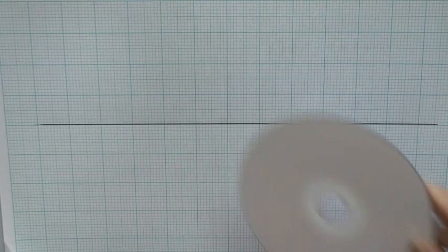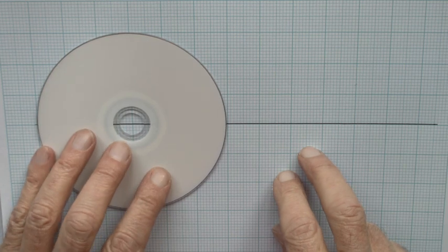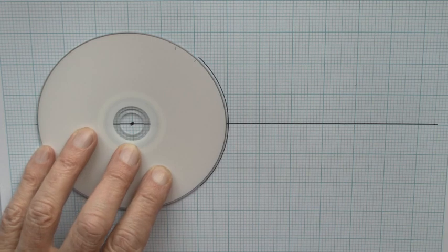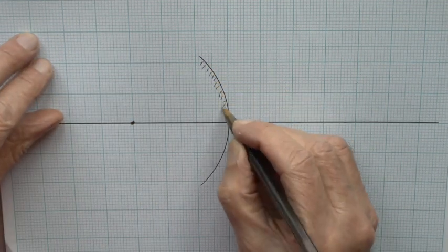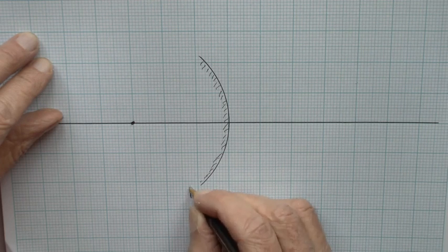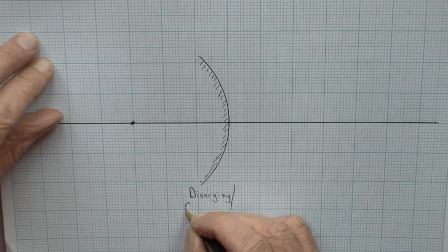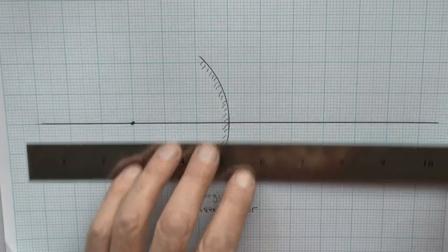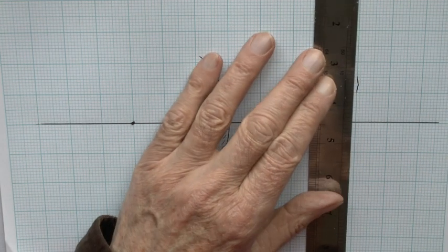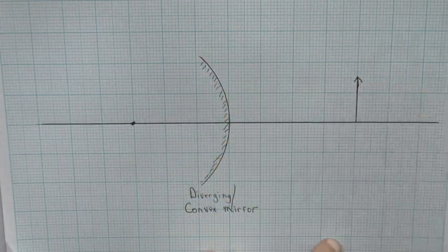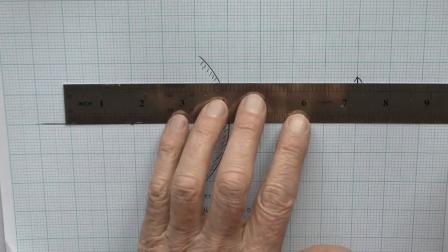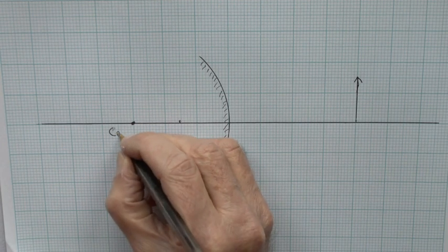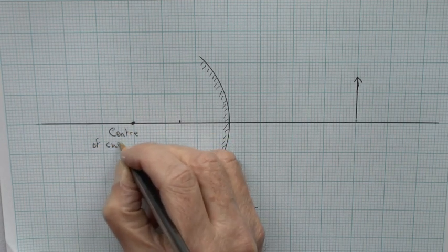Moving on to ray diagrams drawn on graph paper—graph paper is always the best material because it's easy to get the scales right. We'll represent the mirror, mark the center of curvature, shade the back of the mirror so it's obvious it's a convex mirror. We'll draw in an object in front of the mirror some distance away, further than the center of curvature is behind, marking the focal point halfway between the center of curvature and the mirror.